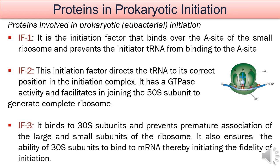Proteins in prokaryotic initiation. Prokaryotic initiation is also known as eubacterial initiation and the protein factors involved are IF1, IF2, and IF3. The ribosome has three sites: the A site, where the upcoming aminoacyl-tRNA comes and joins; the P site, where the tRNA with the growing polypeptide chain is attached and where the first tRNA carrying formylmethionine joins; and the E site, the exit site through which the tRNA leaves the ribosome assembly after transferring the growing polypeptide chain.